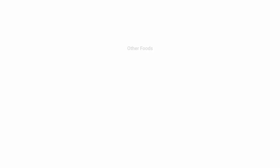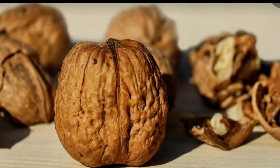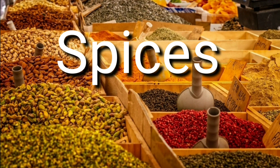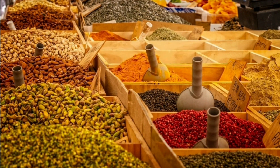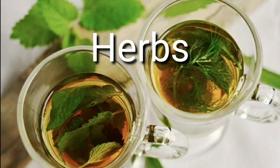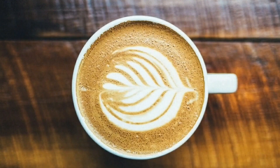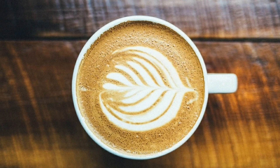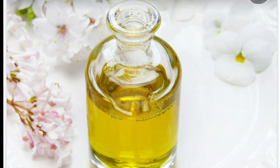Along with this, we have some other foods that we obtain from plants. Nuts such as groundnut and cashew nuts. Spices such as cardamom, clove and cinnamon. Herbs which are coriander, mint, thyme, celery and parsley. Some beverages such as coffee, cocoa and tea are also obtained from plants. Oils are obtained from the seeds of peanut, sesame, sunflower and mustard.